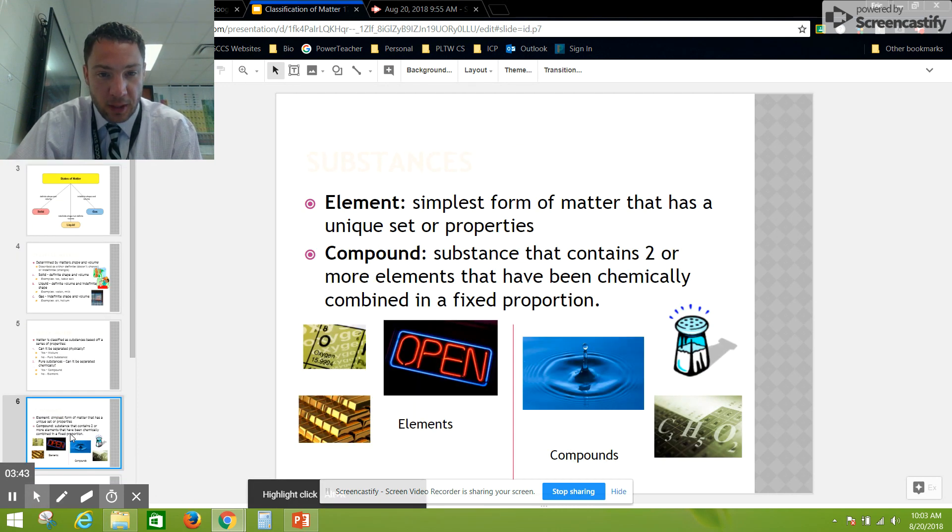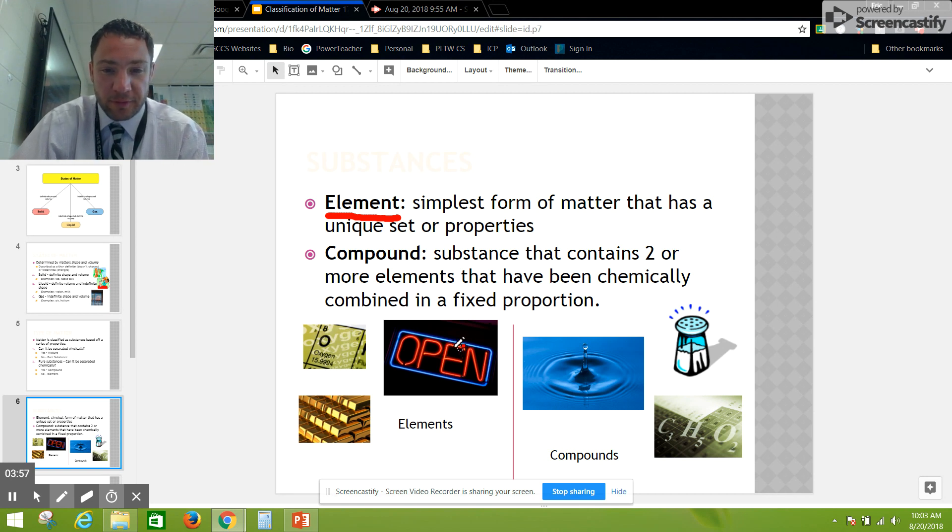Elements, by definition, are the simplest form of matter that has a unique set of properties. You have a whole table of them called the periodic table of elements that we'll be talking about later. They include things like oxygen, gold, and neon. There's over a hundred known elements, some man-made, some natural.